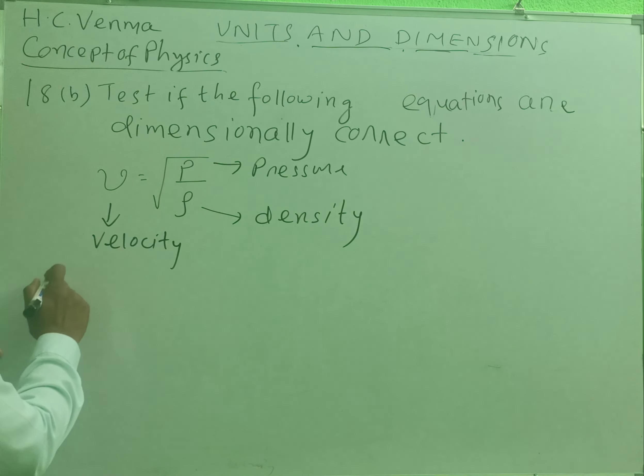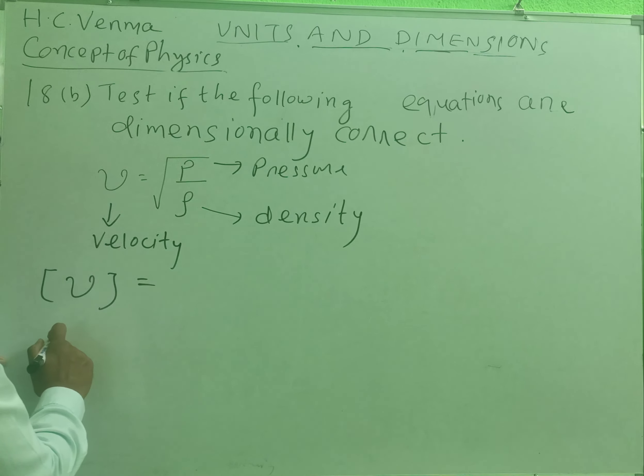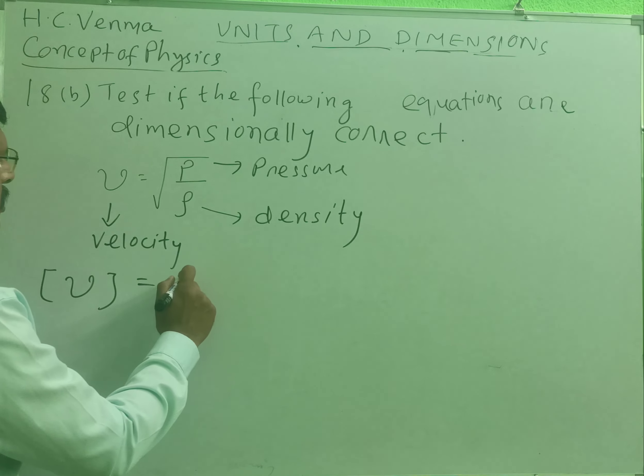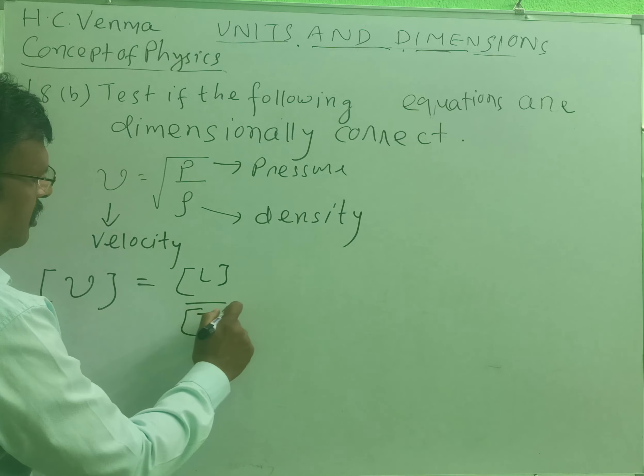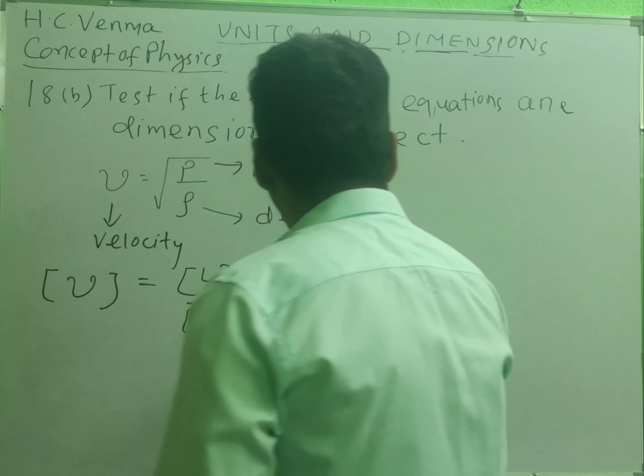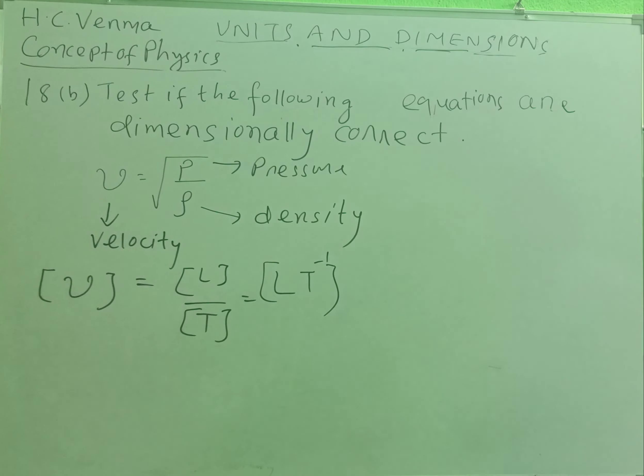What will be the dimensions of the left-hand side? What will be the dimensions of V, velocity V? This is the velocity, rate of change of displacement, or that is equal to displacement by time. So this is L by T, or LT^-1 is the dimensions, or dimensional formula of velocity V.